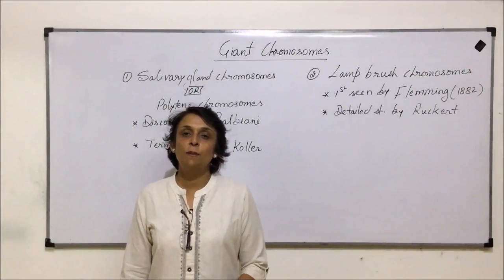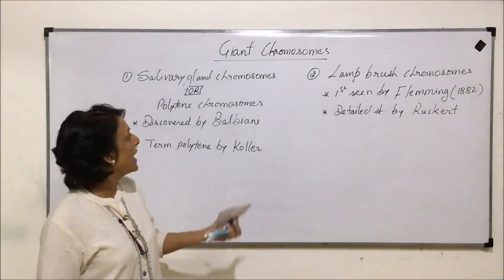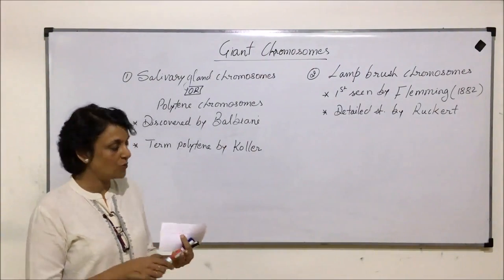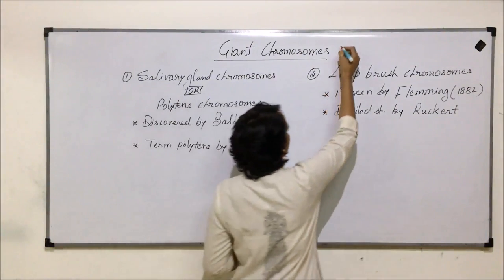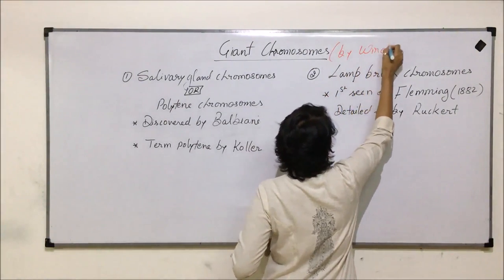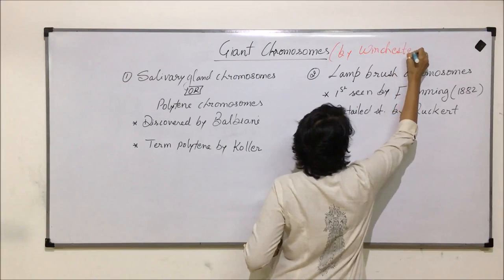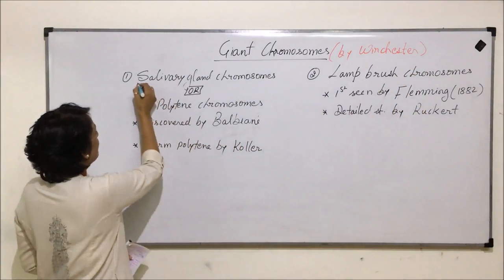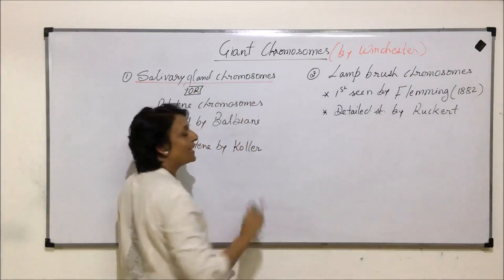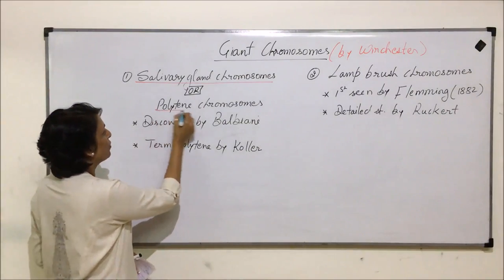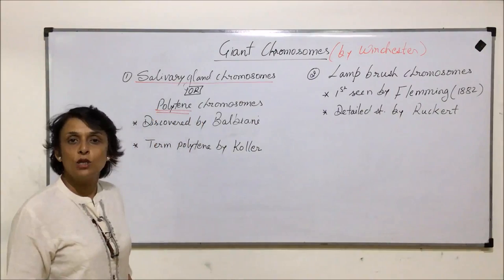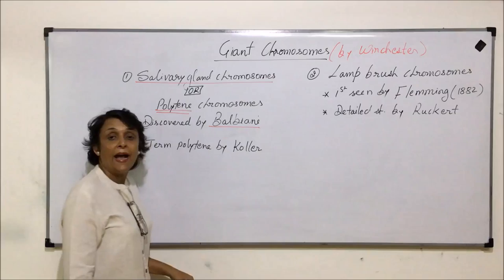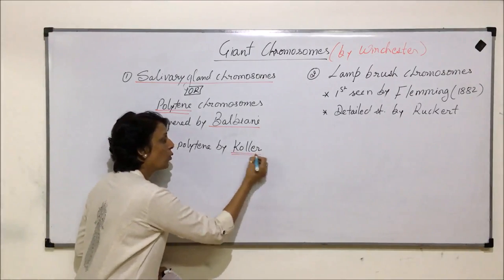In this video we'll talk about giant chromosomes. As the name tells us, giant means these are very big chromosomes. The term giant chromosome was given by Winchester, and there are two main giant chromosomes we would be discussing. One is salivary gland chromosomes, also known as polytene chromosomes. They were discovered by Balbiani and the term polytene was given by Kohler.